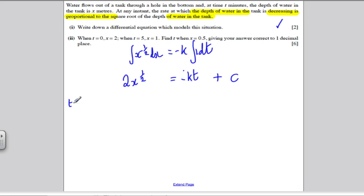Now it tells you at this point, when t is 0, x is 2. So substitute in. 2 to the half is root 2, so 2 root 2 is equal to, well when t is 0 this disappears and we get c. So using that boundary condition, we get that the equation becomes 2 root x is equal to minus kt plus 2 root 2.